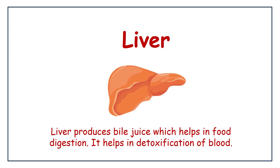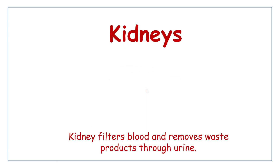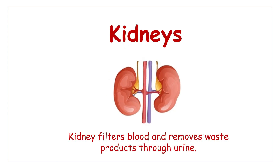Liver produces bile juice which helps in food digestion. It also helps in detoxification of blood. Kidneys filter blood and remove waste products through urine.